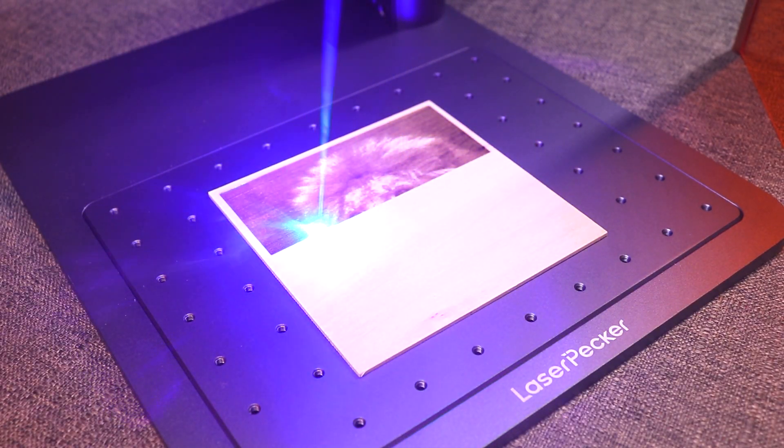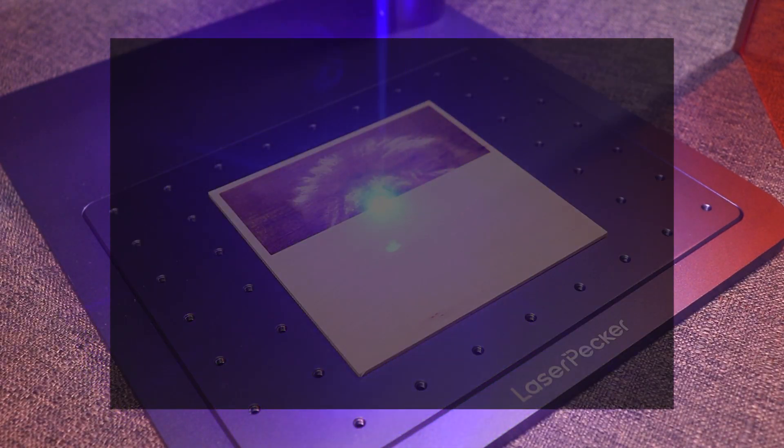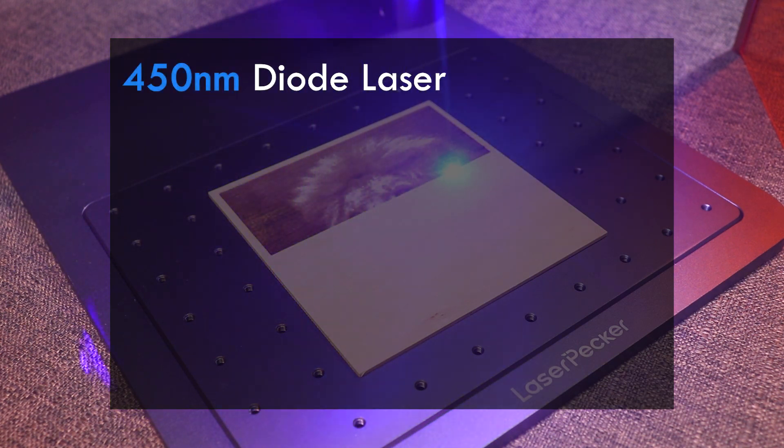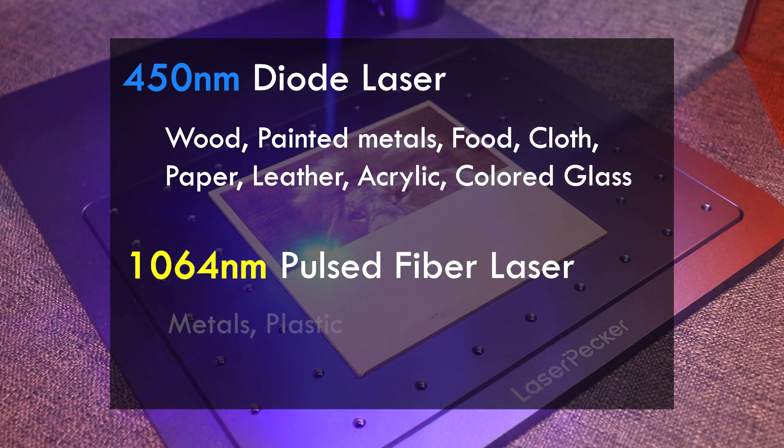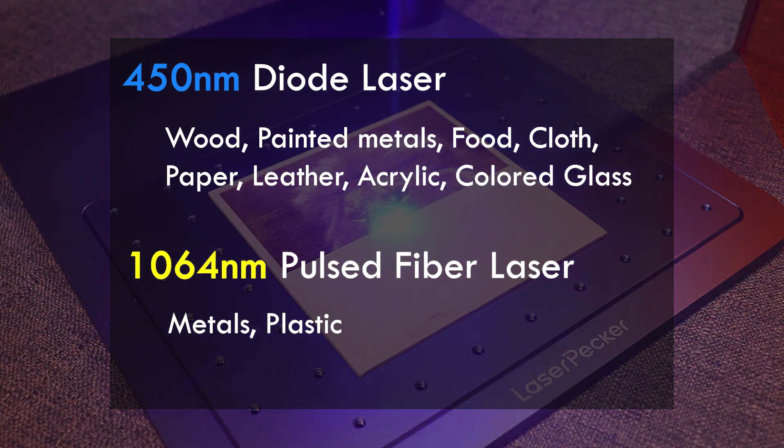So let's talk about the dual laser on this device. First, we have the 450 nanometer which is best for wood, painted metals, food, cloth, paper, leather, acrylic, and colored glass. And then on the other hand, we have the 1064 nanometer which is best used for engraving metals and plastic.